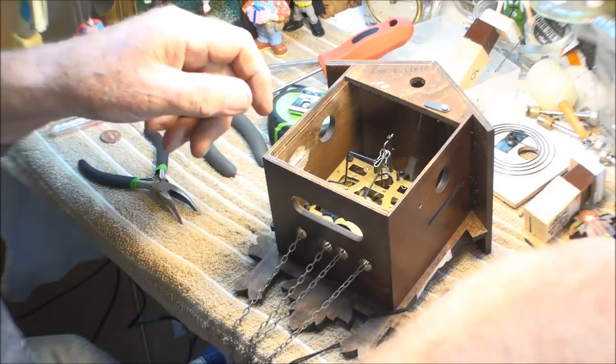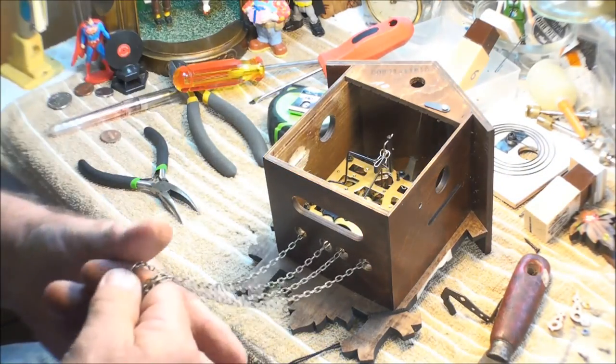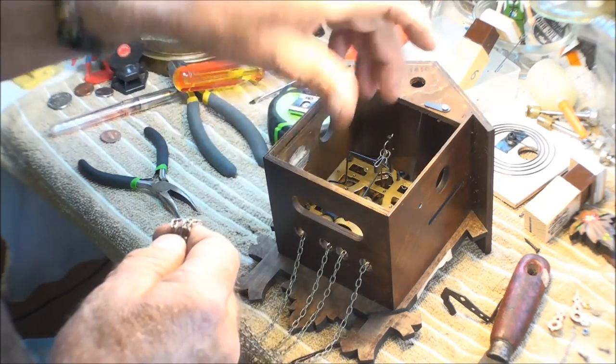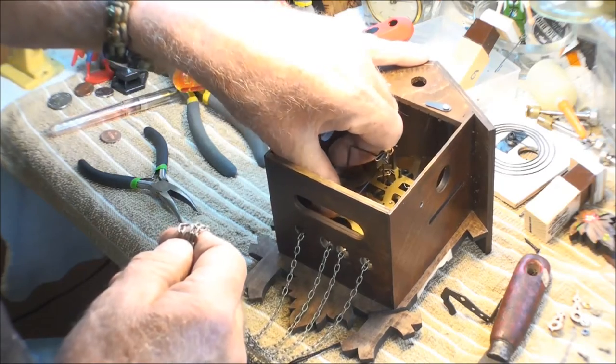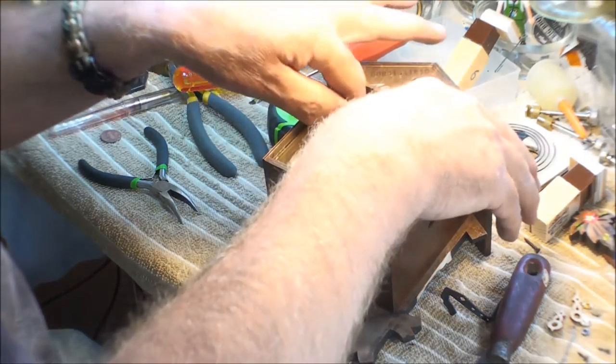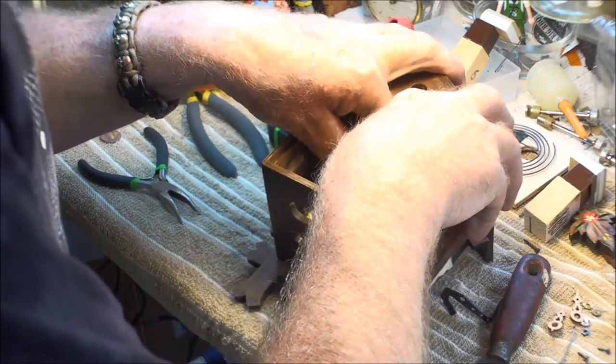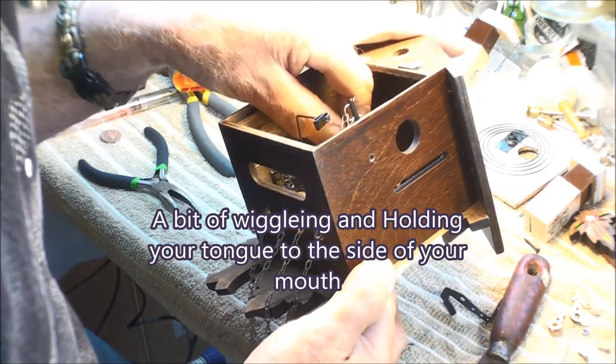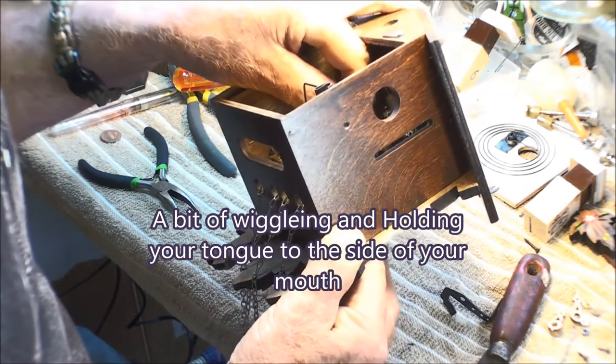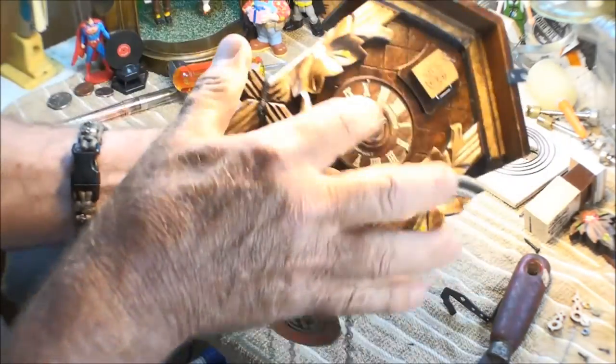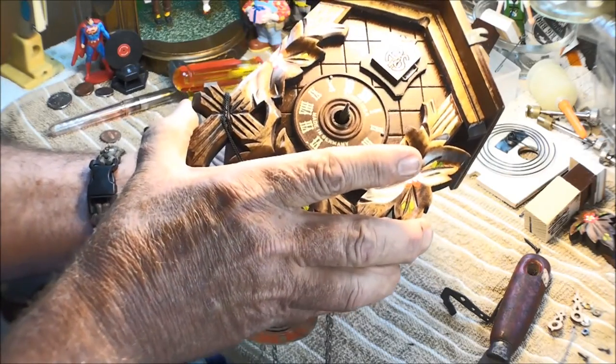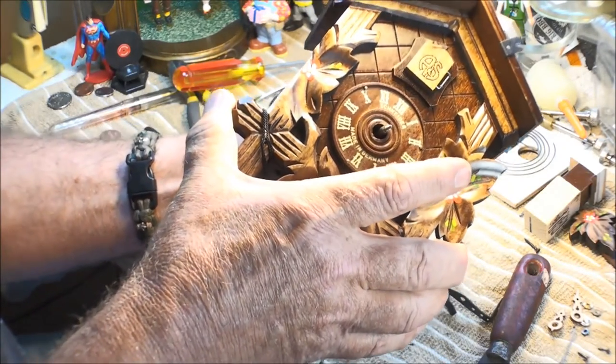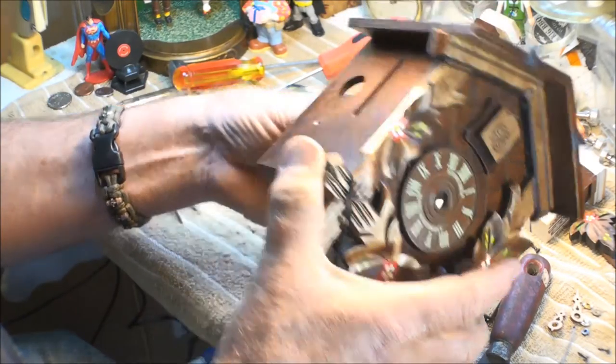The chains are all going to stay hooked up. The bird's going to stay hooked up. Let's see if we can get this out by lifting it toward the top and then pull it out. These smaller clocks are so difficult sometimes. Here we go.